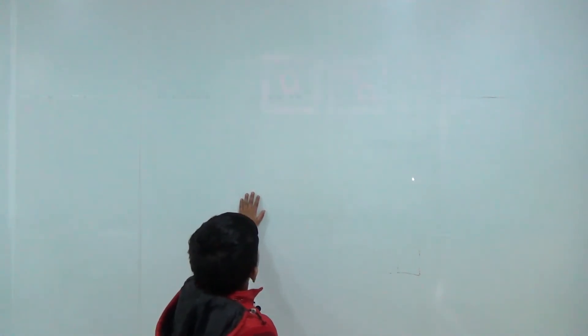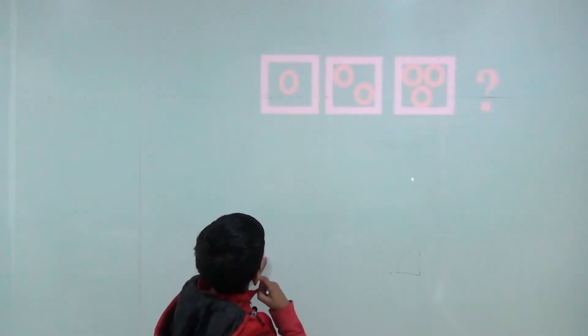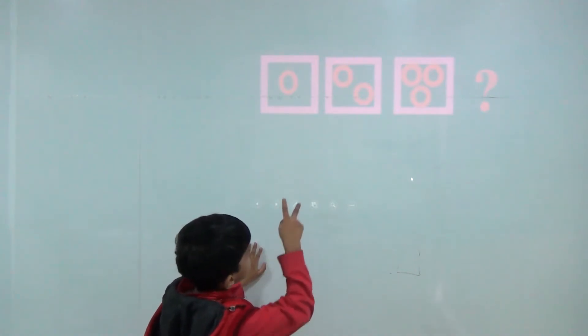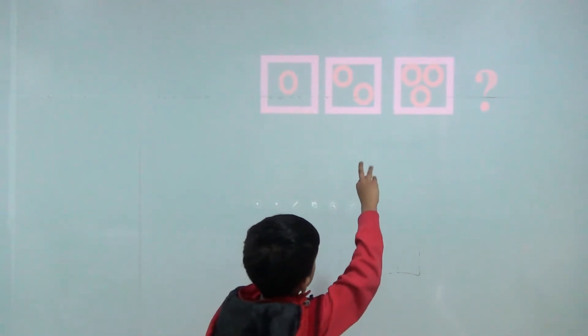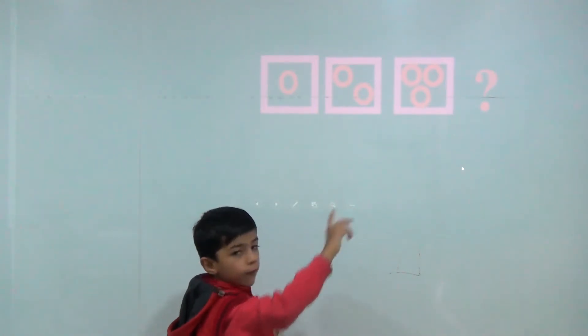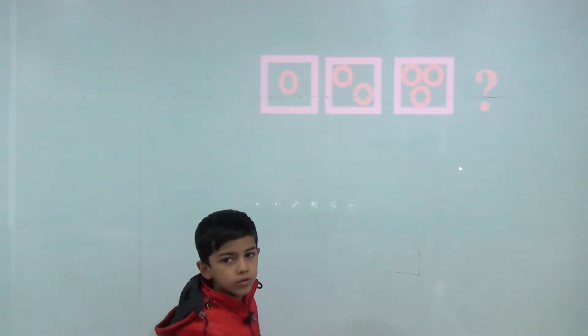One circle, two circles, three circles, so now four circles.